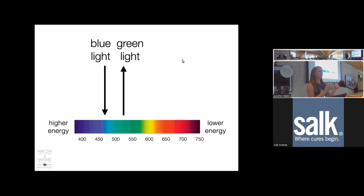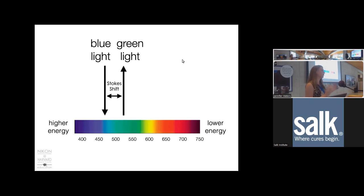The difference between the wavelength that's emitted and the wavelength that's absorbed is called the Stokes shift. To understand why we have a Stokes shift—why we don't just emit a photon of the same wavelength as what we absorb—we have to look at what actually happens to the molecule during the fluorescence reaction.